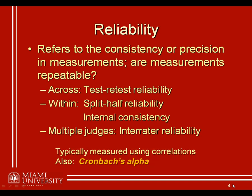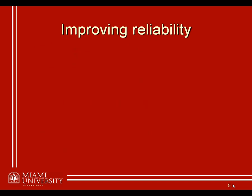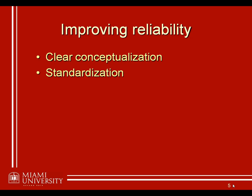Now we know the different types of reliability, and hopefully I've convinced you that reliability or consistency is a good thing when you're trying to measure something. So what we need to do is think about what are some different ways we can improve the reliability of our measurements in behavioral science. We can never guarantee good reliability, but we can always try and take steps to make sure that our measurements and results are as consistent as possible. The first is through clear conceptualization — thinking about exactly what is the construct we're trying to measure and making it as specific as possible. That's going to help us create a great operational definition and therefore a more reliable one as well.